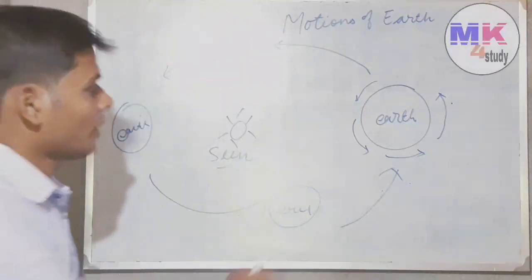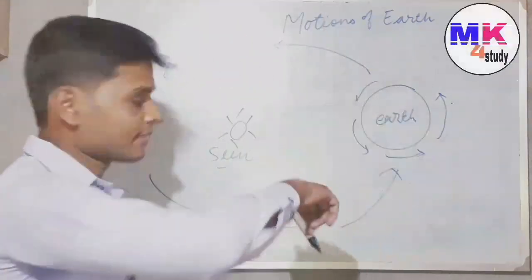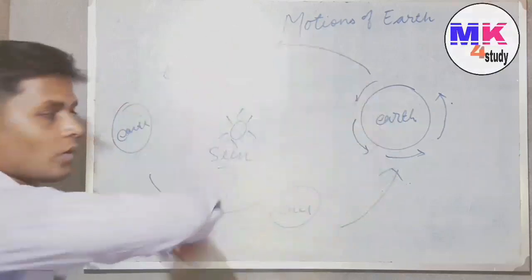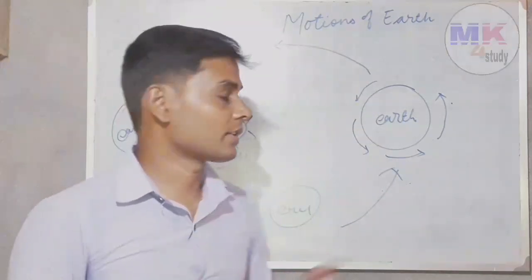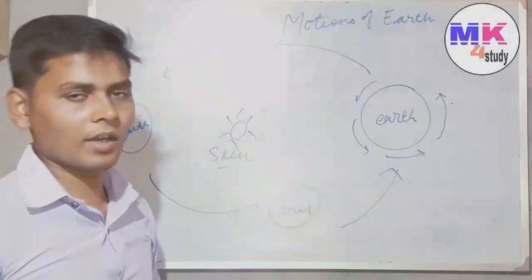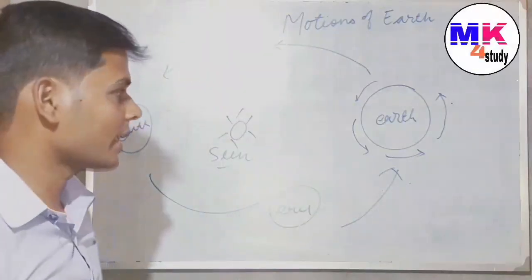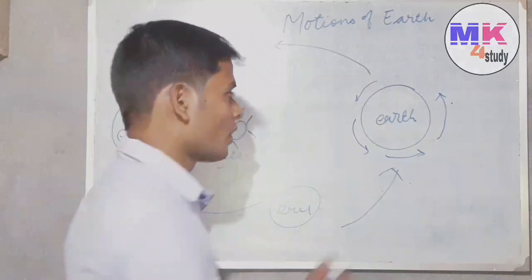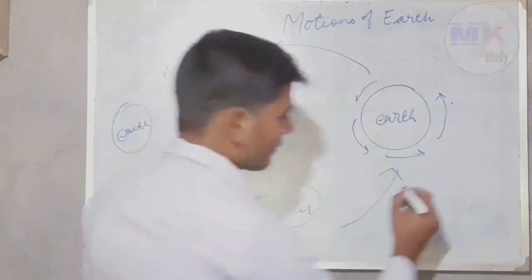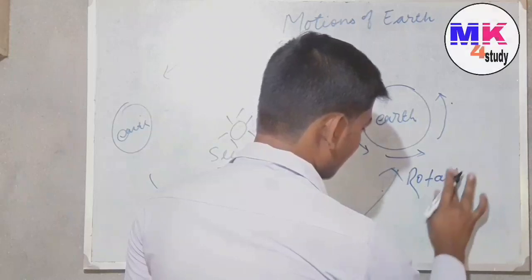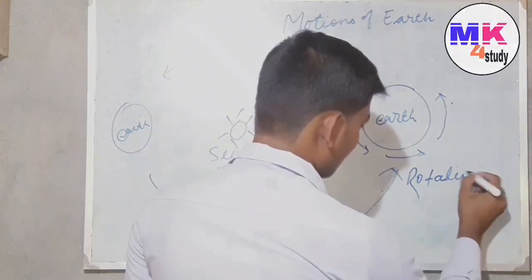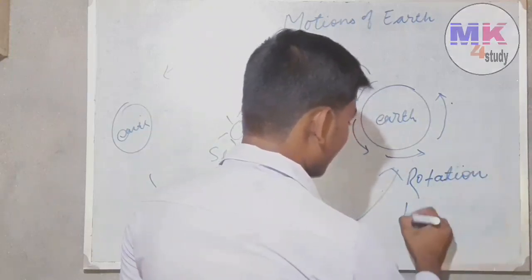Understand? First is in its axis, and second is around the sun. There are two movements of earth. You can say motions and movements - both words have equal meaning. So earth has two movements. First one is rotation, and second is revolution.